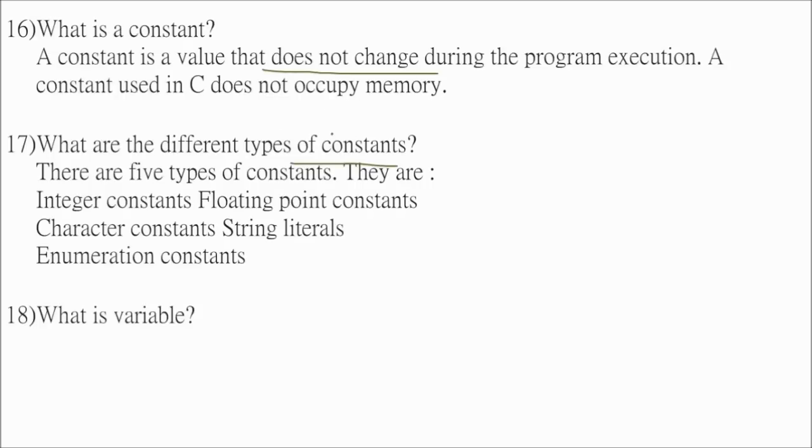Then what are different types of constants? There are five types of constants. If you are asked, you can tell them. Integer constants, floating point constants, character constants, string literals, and enumeration constants. There are five constants.